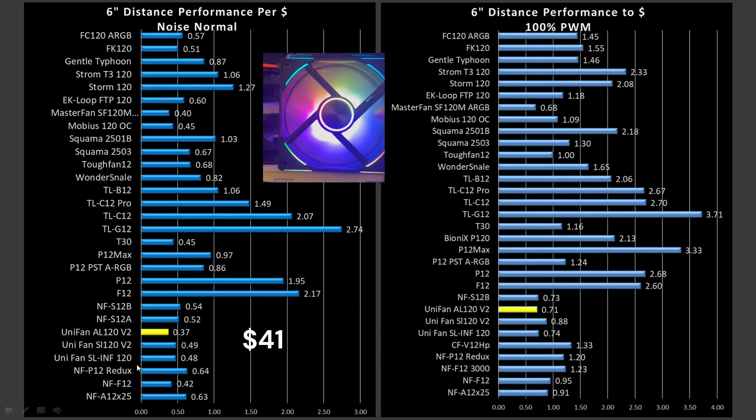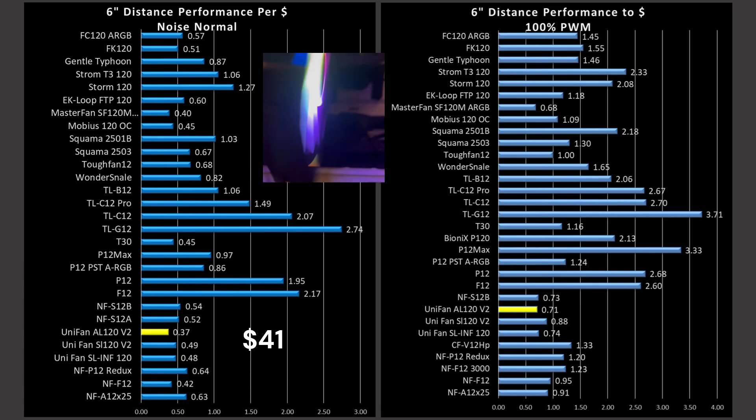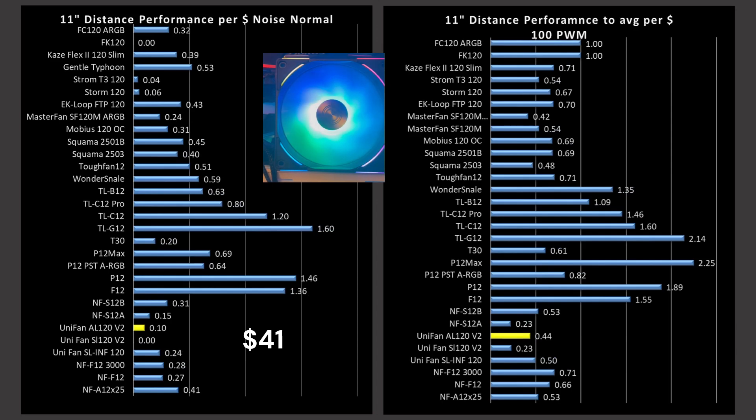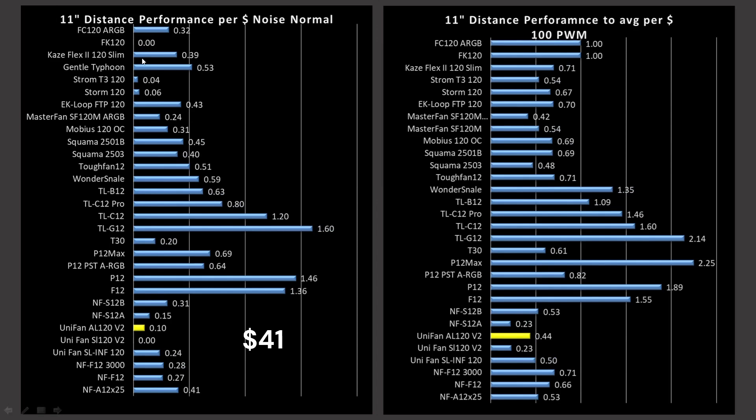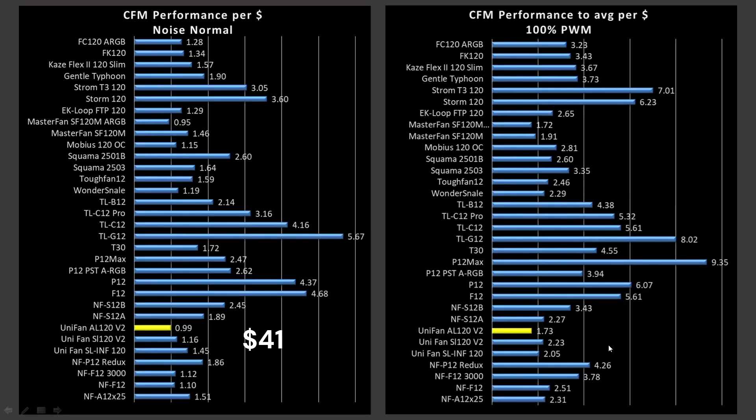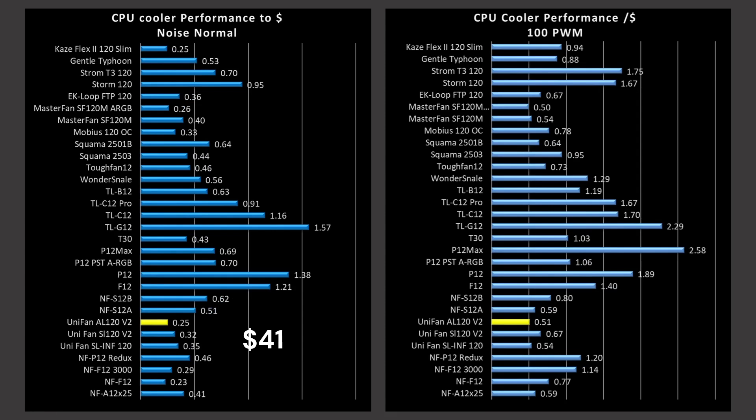So in value, the AL120 version 2 noise normalized is crap. It's really bad. It's dodge. So in terms of 100%, it's still really bad. At the 11-inch mark, it's not the worst. There are other fans that had no airspeed, but no. At 100% PWM fan signaling, it's still no. So CFM testing, noise normalized, pretty bad. 100% pretty bad value. There are other fans that are better value. And through the CPU air cooler, very bad. So, is this fan a good value in any test? Absolutely not. This fan is terrible value.